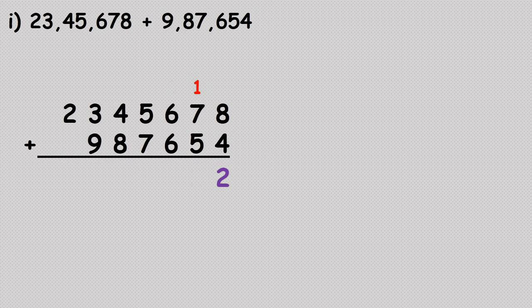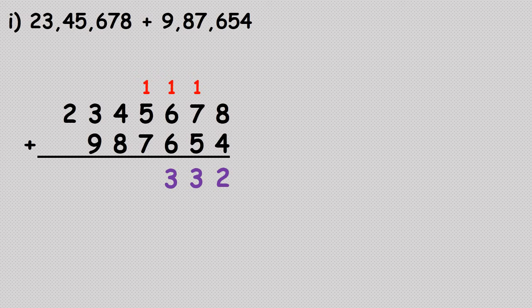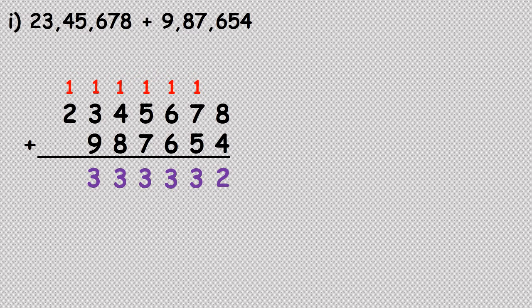Next column: seven plus five is twelve, plus one carried is thirteen — carry one, write three. Six plus six is twelve, plus one is thirteen. Five plus seven is twelve, plus one is thirteen. Eight plus four is twelve, plus one is thirteen. Nine plus three plus one is thirteen. The last column: one plus two is three. So the answer we get is thirty-three lakh thirty-three thousand three hundred and thirty-two.